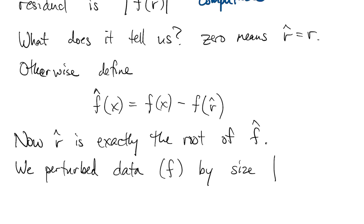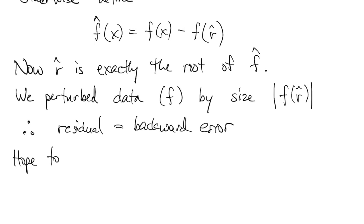So once again, appealing to our idea of backward error, the residual tells us the size of the backward error. So what we're going to hope to do is to make the backward error small and answer nearly the right question, even if we can't get close to the answer because of the large condition number.